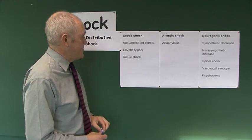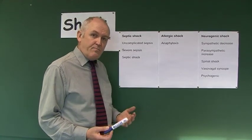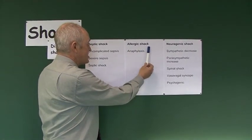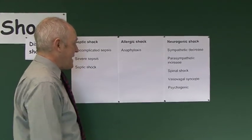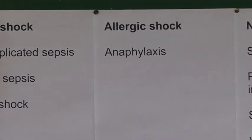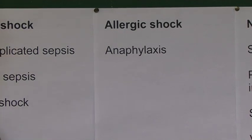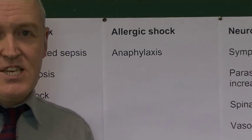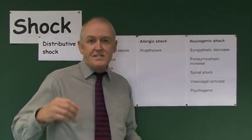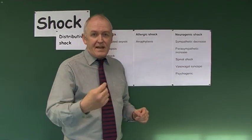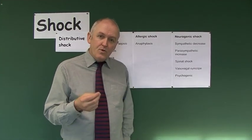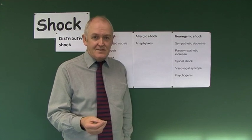The next type of distributive shock, again largely caused by lack of vasomotor tone, is severe allergic reactions — anaphylaxis or anaphylactic shock. Here the body is exposed to an allergen, that is an antigen that the body is allergic to. This antigen interacts with antibodies, and these antibodies are normally found on the surface of mast cells.